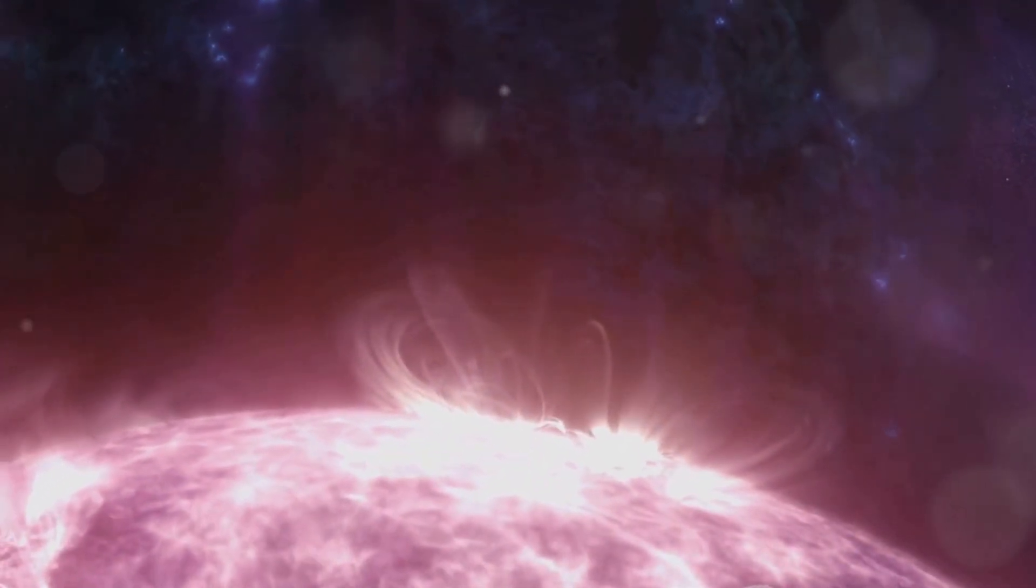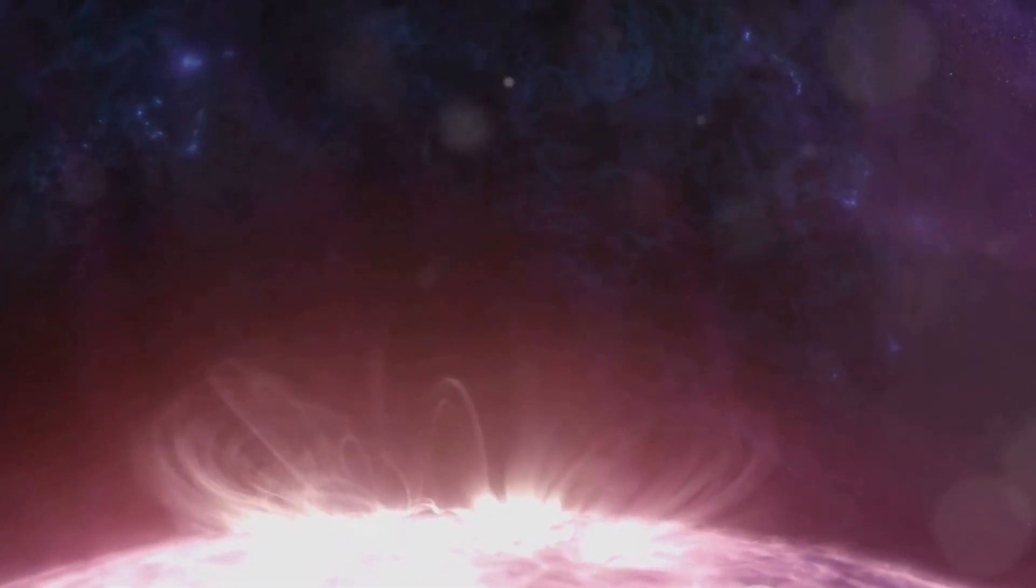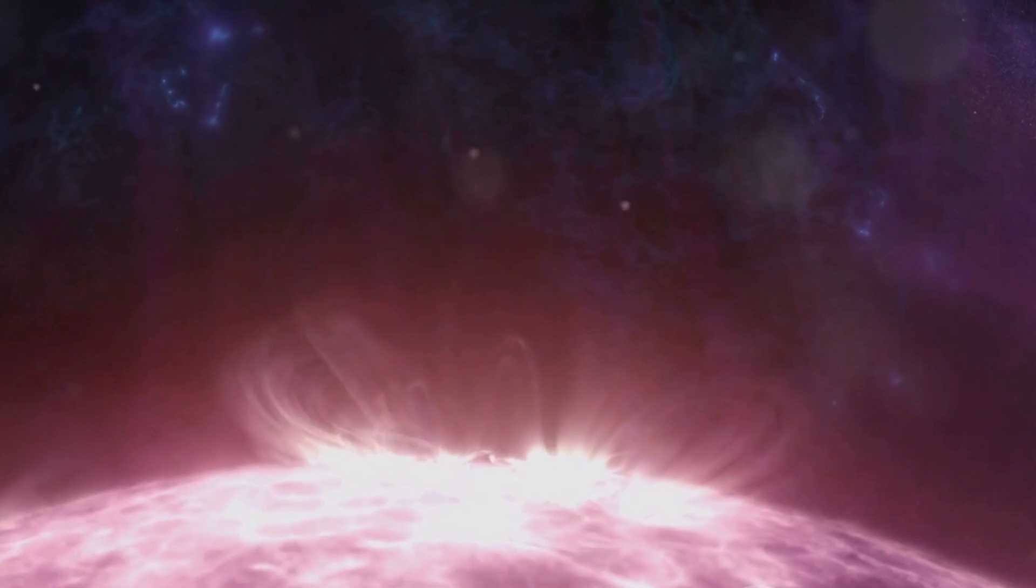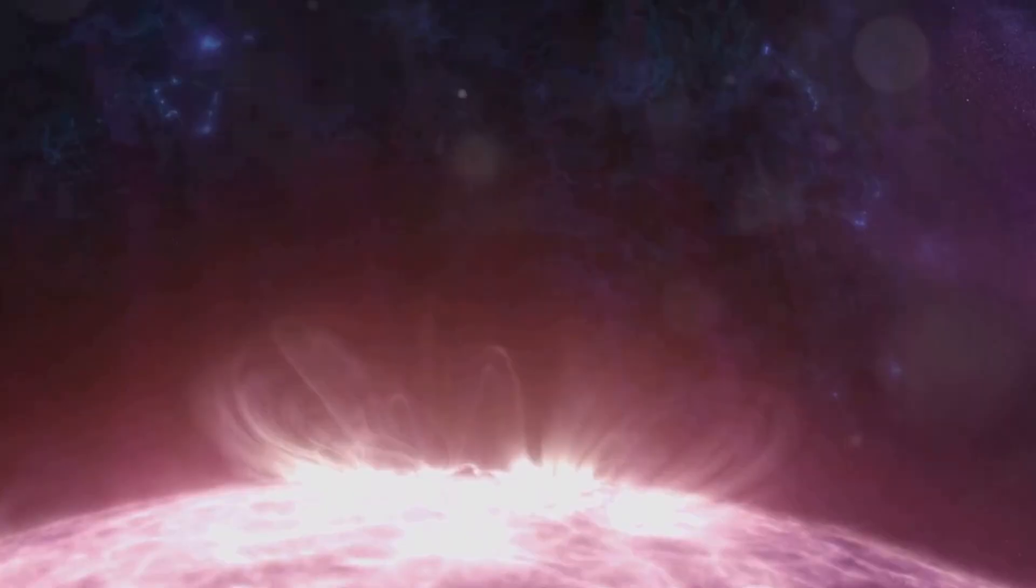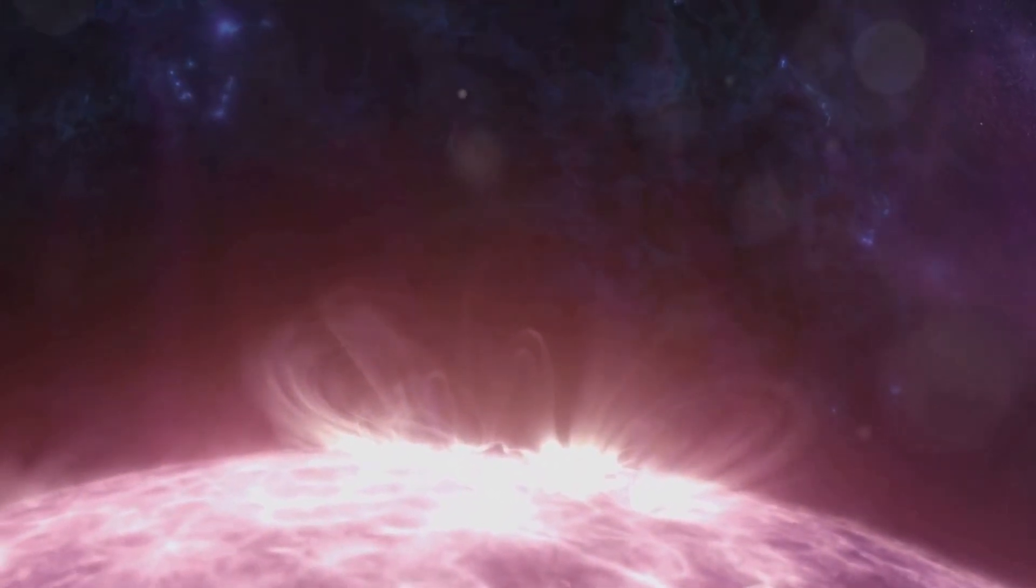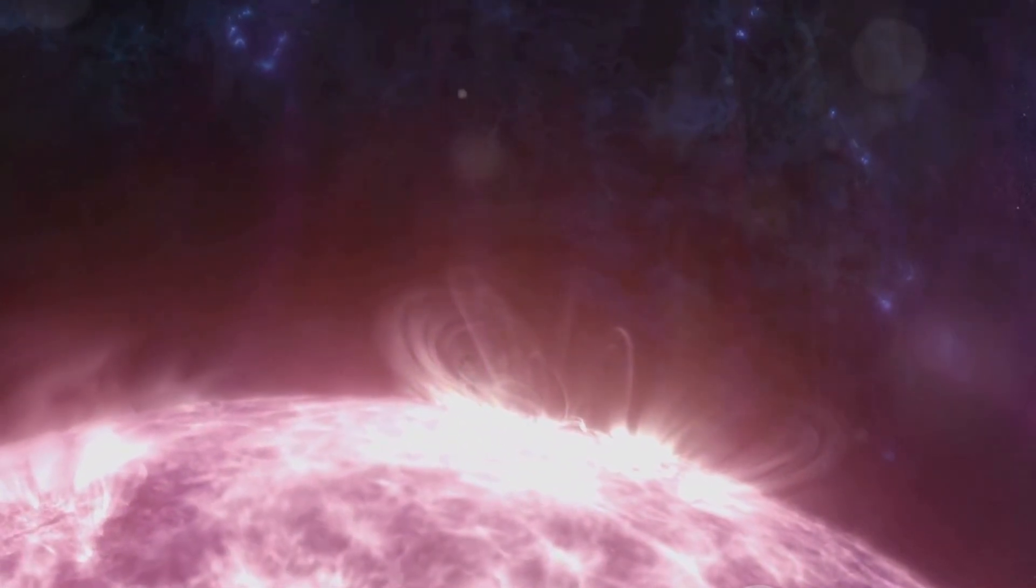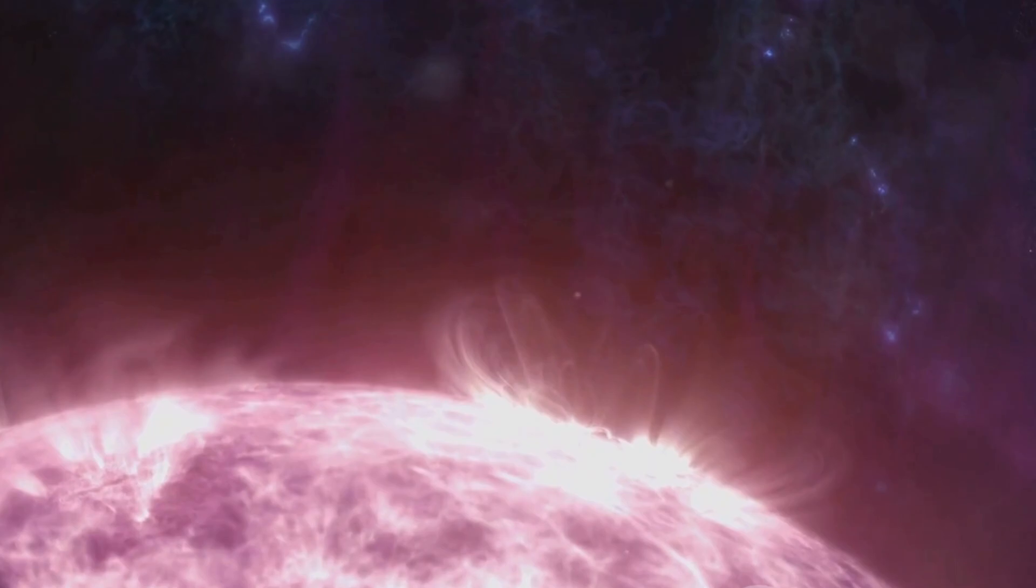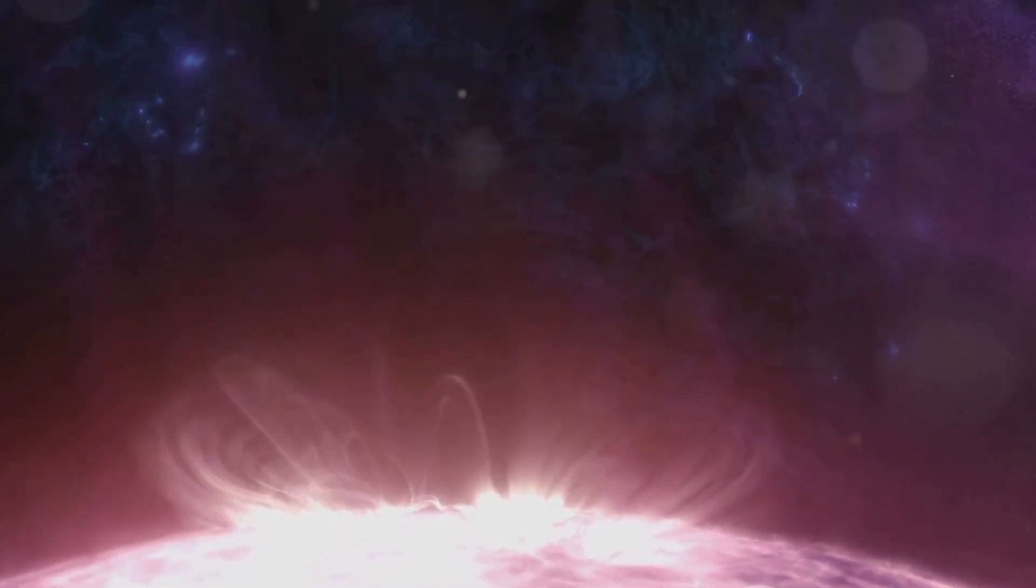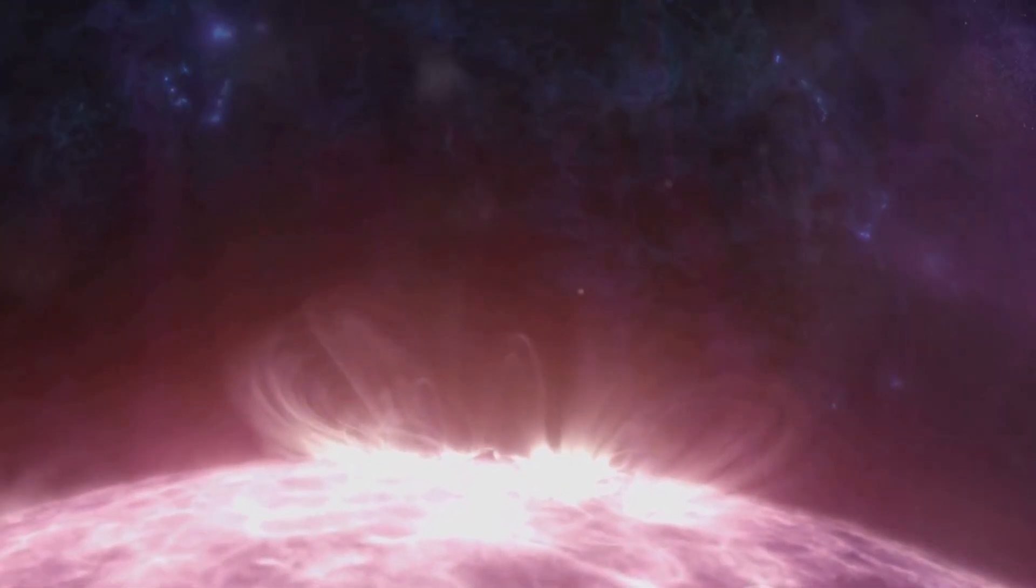Now imagine this celestial onslaught directed towards our home planet. The continuous flow of charged particles can cause our protective magnetic field to fluctuate wildly. This isn't just about creating beautiful auroras - it's about a sustained attack on our planet's protective shield, and the repercussions can be severe. The Earth's magnetosphere, our first line of defense, can only take so much. With each solar flare and coronal mass ejection, the pressure builds. The magnetic field bends and twists, trying to absorb and deflect the onslaught.